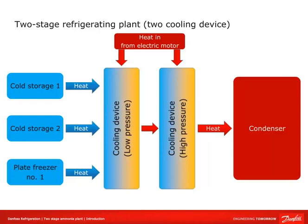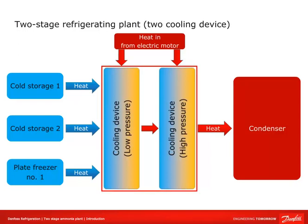This represents a general refrigeration process where heat is removed by a two-stage refrigerant plant. Here we have two cooling devices — low pressure and high pressure — running in parallel with an intermediate cooler in between. All the heat from the cold store and the cooling devices is sent through the condenser and expelled outside.